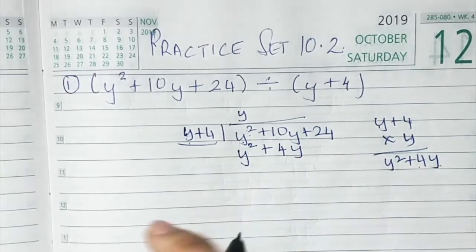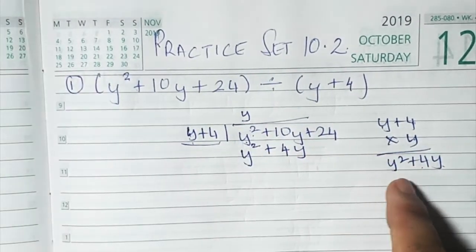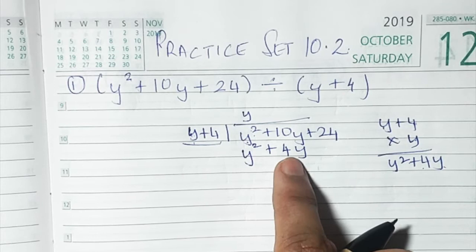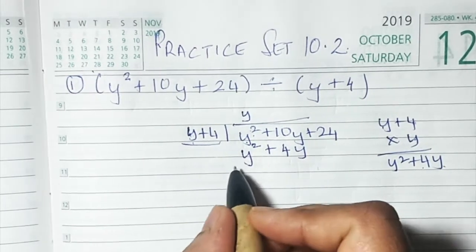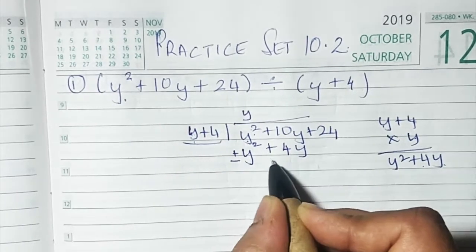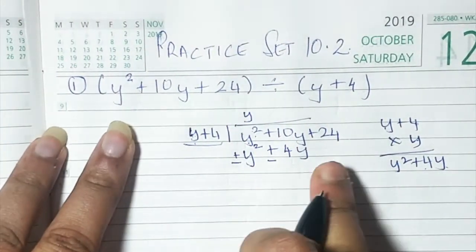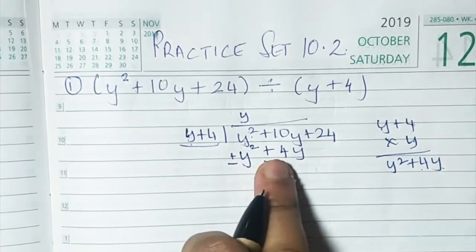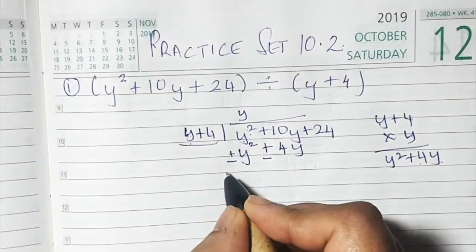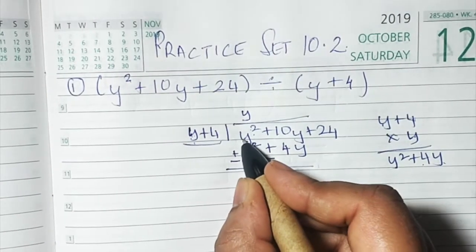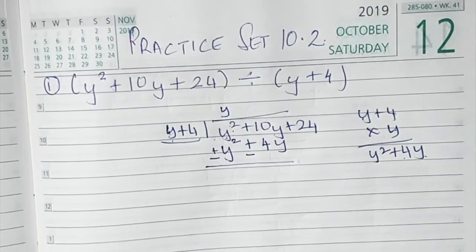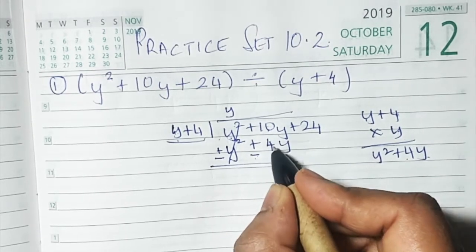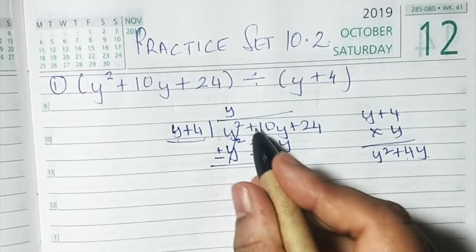We multiplied by y, so we write y² + 4y below. Now remember, when subtracting we change the signs: plus becomes minus and plus becomes minus. So y² + 10y + 24, minus (y² + 4y): y² cancels with y². Then 10 minus 4 is 6, and the sign of the greater number is positive, giving us 6y.